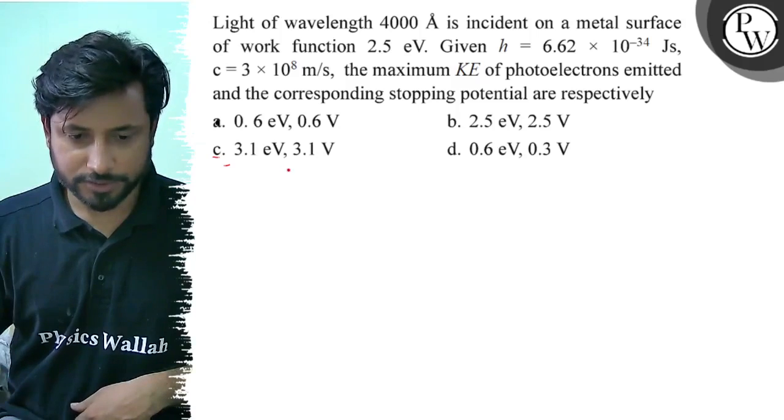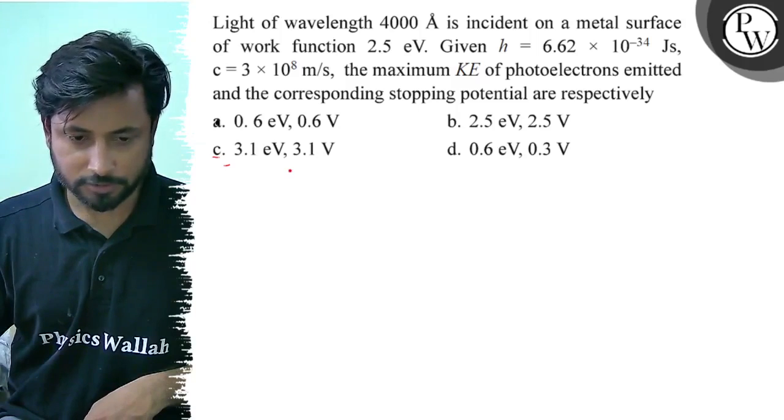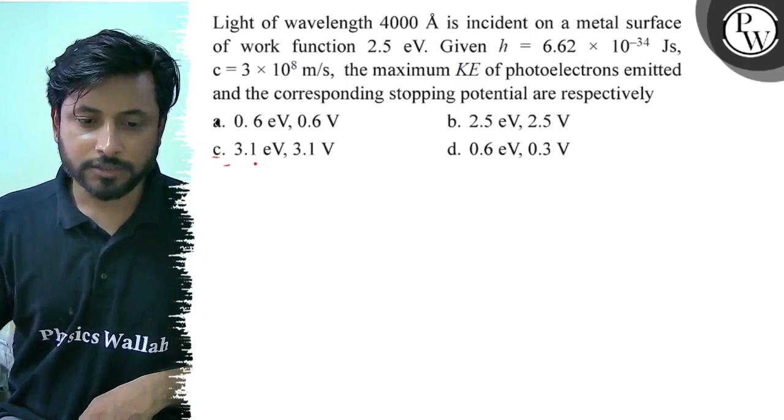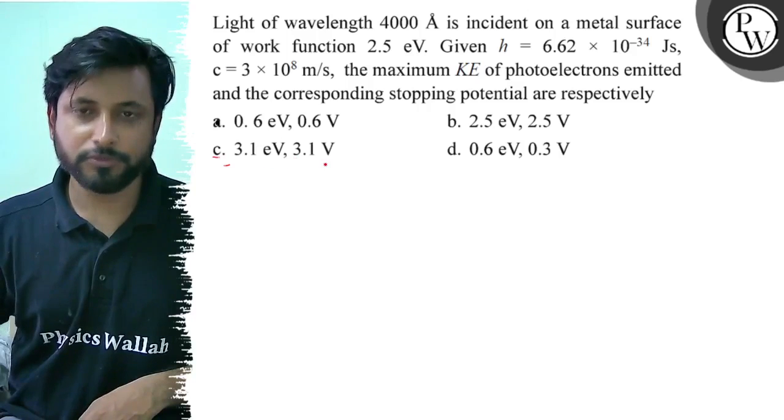Option A: 0.6 electron volt, 0.6 volt. Option B: 2.5 electron volt, 2.5 volt. Option C: 3.1 electron volt, 3.1 volt. Option D: 0.6 electron volt, 0.3 volts.